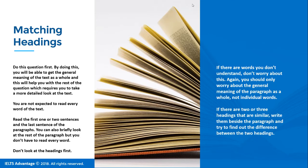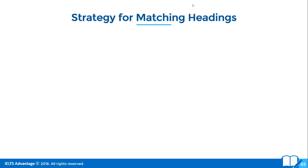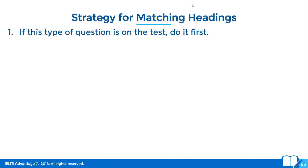If there are two or three headings that are similar, write them beside the paragraph and try to find out the difference if you have time. If you still can't decide which one suits best, move on and come back later. This is a detailed strategy for matching headings, and then we'll talk about how to simplify it. Let's get into the detail first, because I don't want anyone to miss anything, and then we'll get into a simpler strategy.